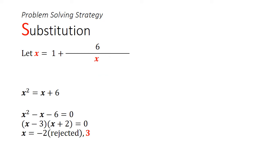This gives us a quadratic equation, x squared minus x minus 6 equals to 0, which we can then solve. Since all the values are positive in the fraction, we will reject the solution of negative 2.